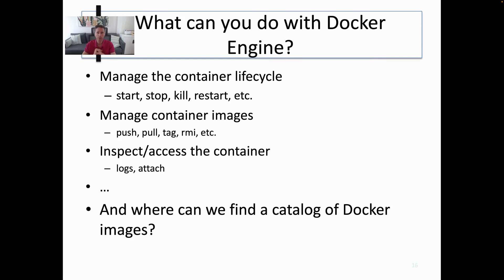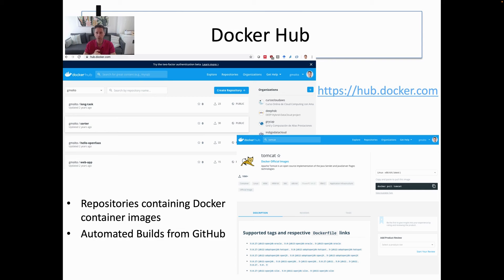What can you do with the Docker engine? It's basically managing the life cycle of containers: starting containers, stopping, killing, restarting, managing the container images, accessing the containers, and seeing the logs. The catalog of Docker images is available in Docker Hub — a set of repositories containing Docker container images. If you have the appropriate subscription, you can also trigger automated builds from GitHub. Whenever you commit your latest changes into your source code stored in GitHub, this can trigger the automated creation of a Docker image so that you have an updated deployment artifact — the Docker image — built from the source code of the application in GitHub.